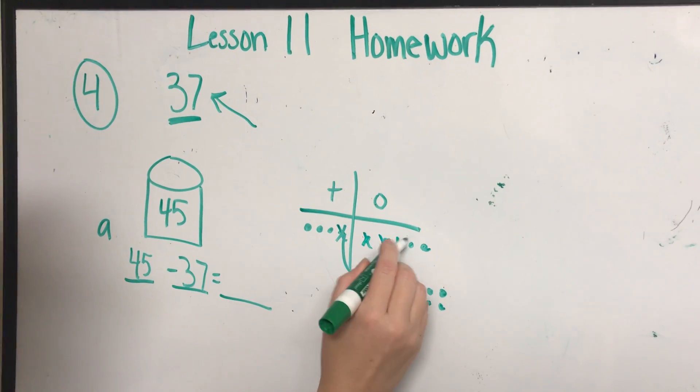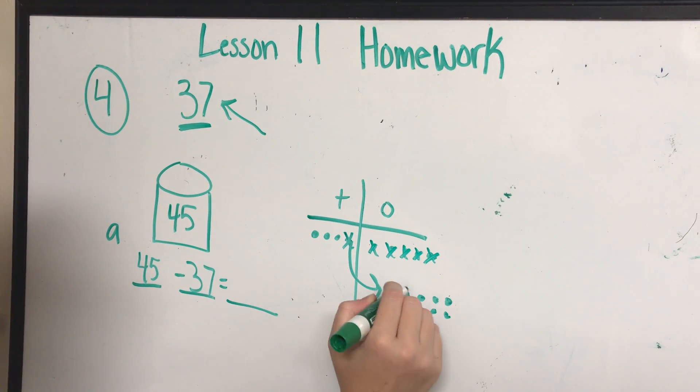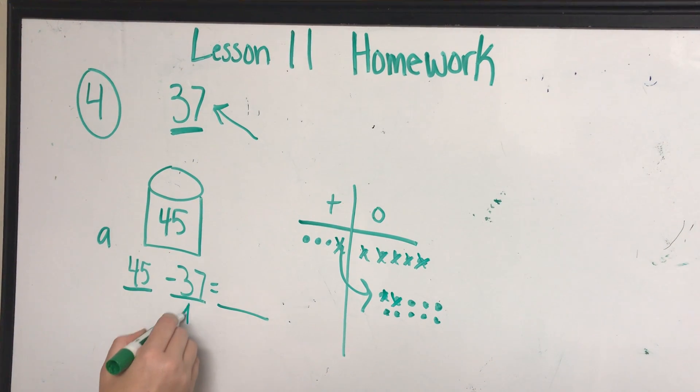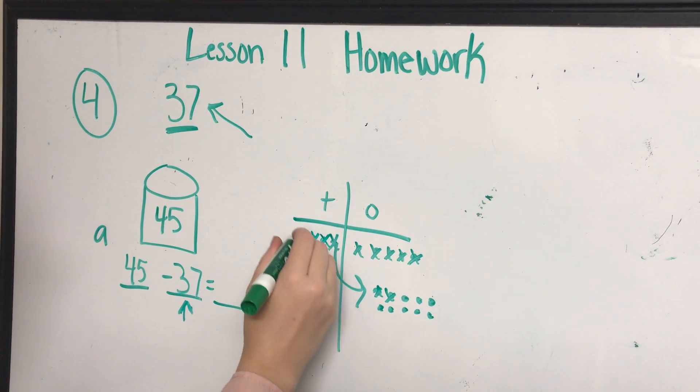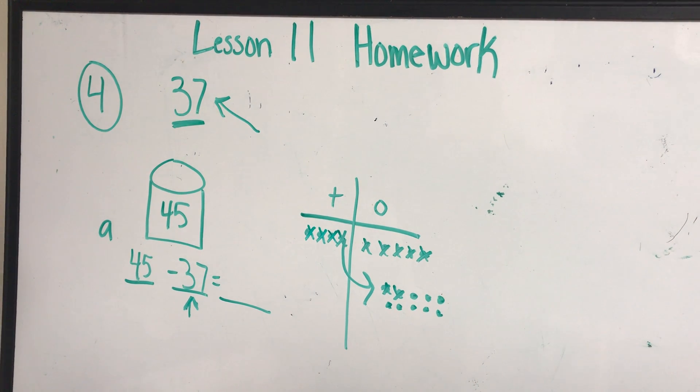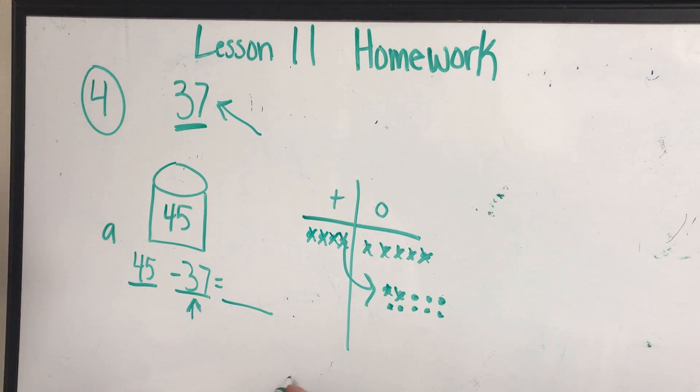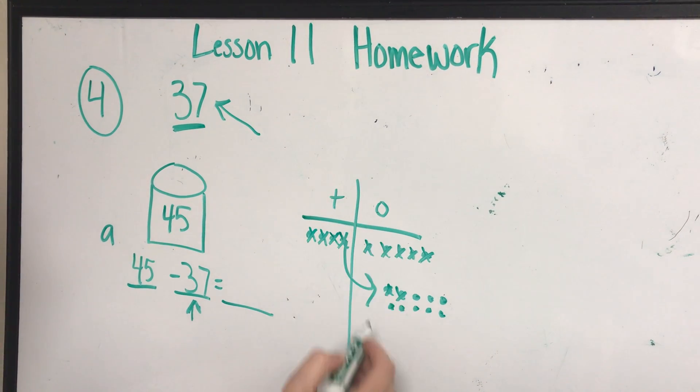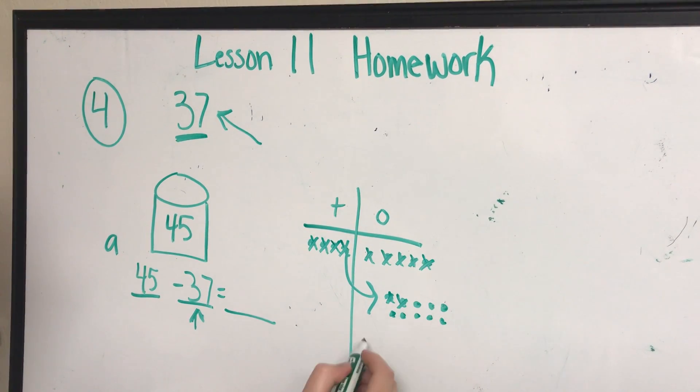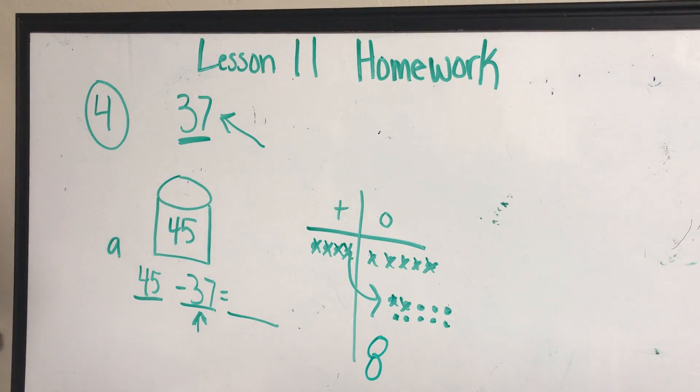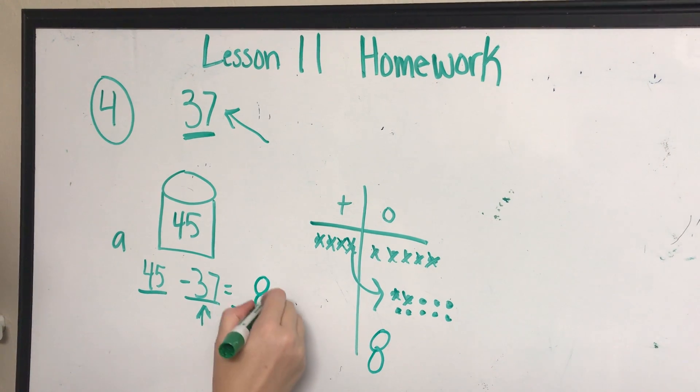Am I done? No, I still need to subtract my three that's in my ten spot. One, two, three. Now I've got to figure out my answer. How many tens do I have left? Nothing. How many ones do I have left? One, two, three, four, five, six, seven, eight. So what's my answer? My answer is just eight.